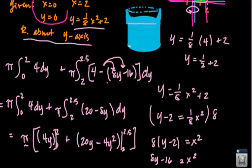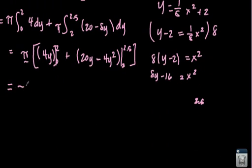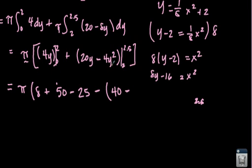Okay, all right, so now I'm going to go ahead and plug in my values. So I'm going to do this first value first. So 4, and I'm subbing in 2 is 8, 4 times 2 is 8. And then if I subbed in 0, it would be 4 times 0, which is 0, which I'm not going to write for obvious reasons. And then I'm going to add that to my second part, from 2 to 2.5. So I end up with 20 times 2.5, which is 50, minus 4 times 2.5 squared, so 2.5 squared is 6.25, times 4, which is 25, okay? And now I'm subtracting everything from here, so I have to use parentheses, okay? So 20 times 2 is 40, minus 4 times 2 squared, which is 4, so 4 times 4 is 16, okay?